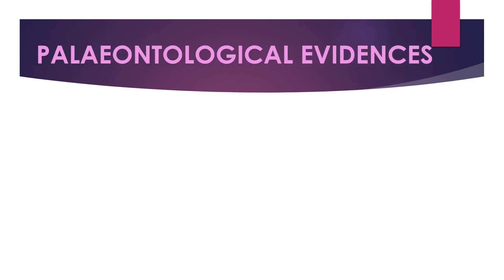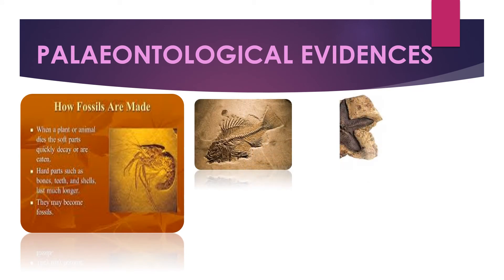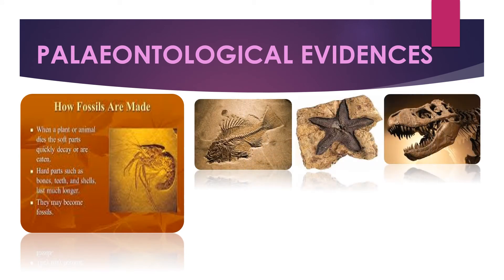Paleontological evidence: remains of starfish, fish, and dinosaurs were discovered years later, giving us an idea of what these organisms looked like. These were preserved in stone or under the earth and are called fossils. When a plant or animal dies, the soft parts quickly decay or are eaten up, but the hard parts such as bones, teeth, and shells last much longer and become fossils.